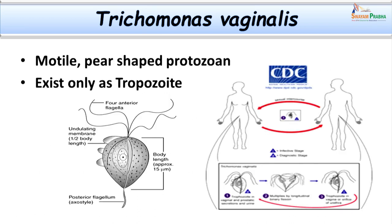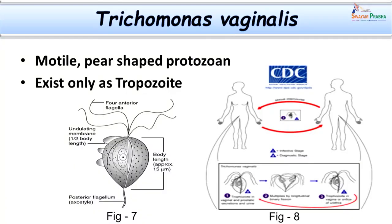Trichomonas vaginalis is a protozoan parasite. It is motile, pear-shaped, and importantly it exists only as a trophozoite, not in cyst form. Its morphology includes four anterior flagella, one axostyle in the center, and an undulating membrane which covers half the body of the parasite. The length is approximately 12 to 15 micrometers. The life cycle is very simple, involving only human beings as a single host, with only one form — the trophozoite — which divides by binary fission.